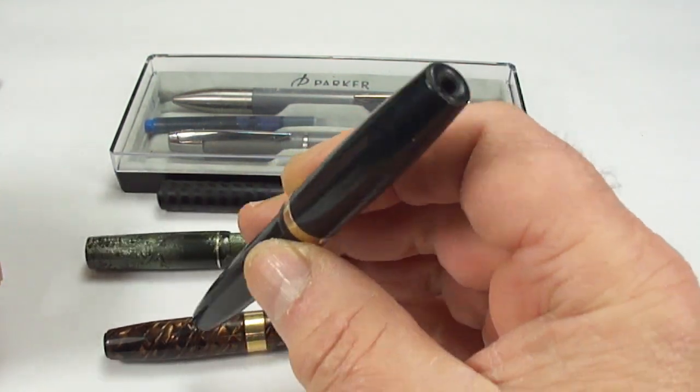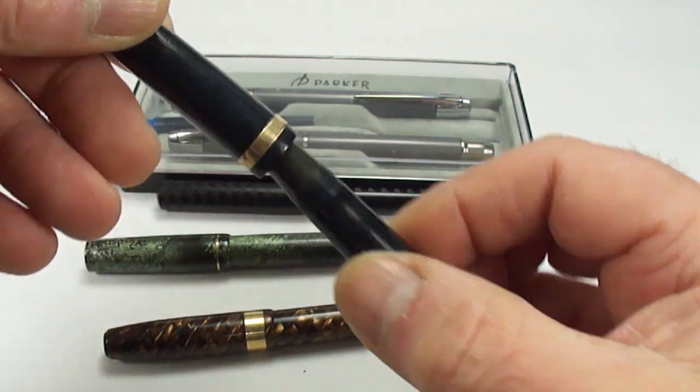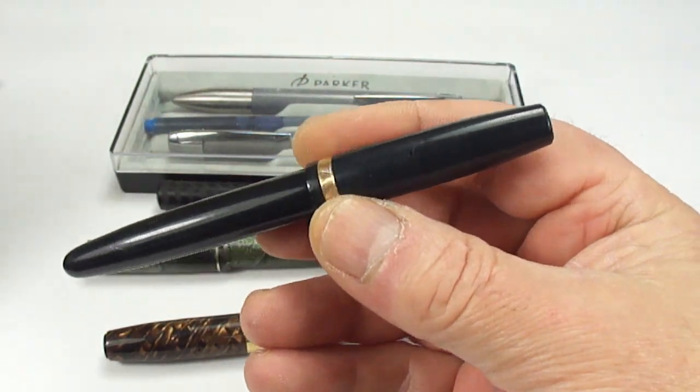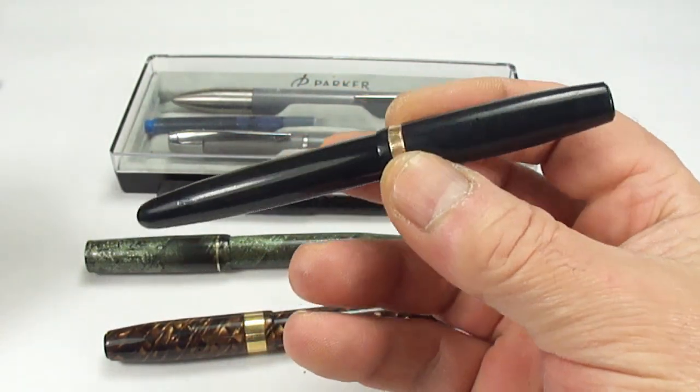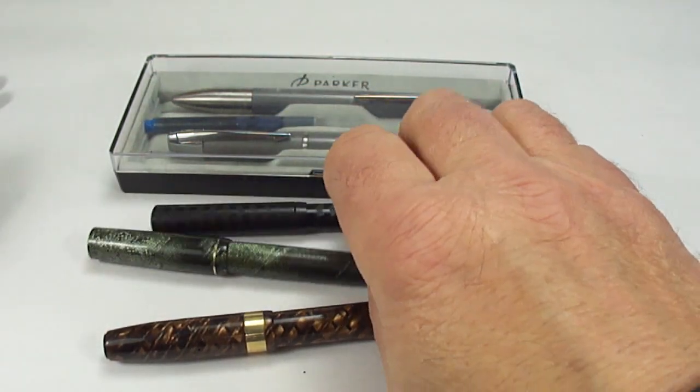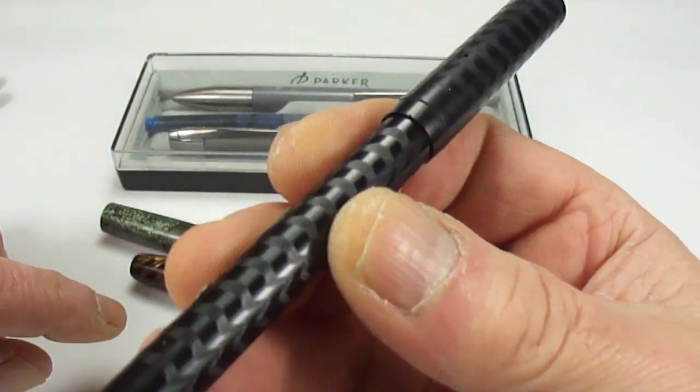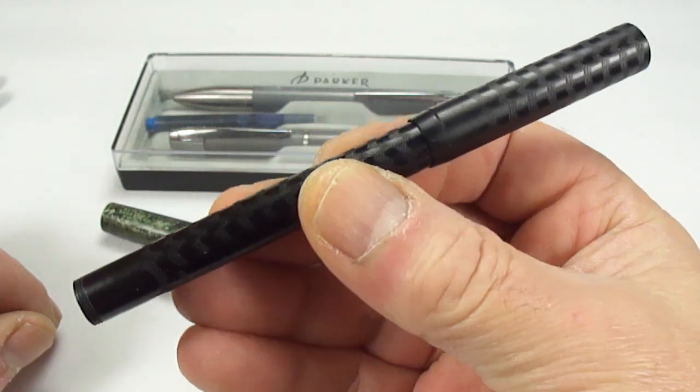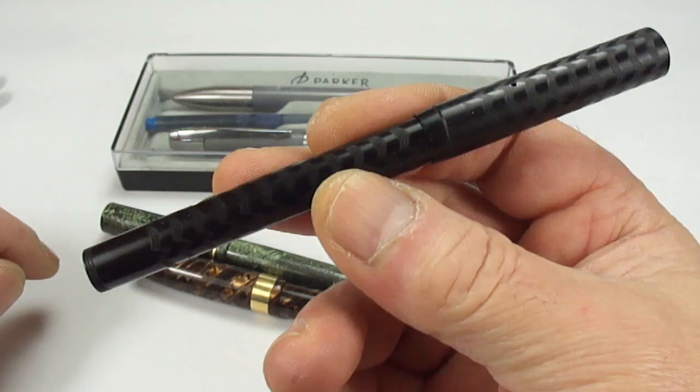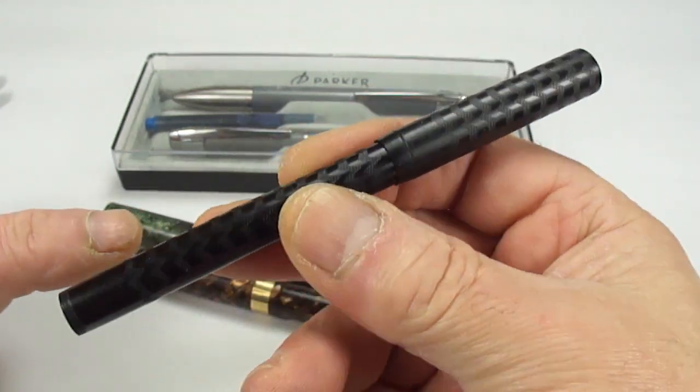Parker Duofold - you can see it's got the clip, the jewel to the top there missing, so we need to find parts for that as well. I think I've done a review on that one as well. We've got another pen here, a nice old pen. This one's got no name on it, it's got this lovely chase pattern. But what I'll do, I'll service this one. I may do a review on it, but again, well I've got the parts, we just need to give it a good service.